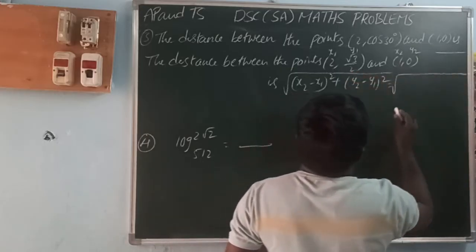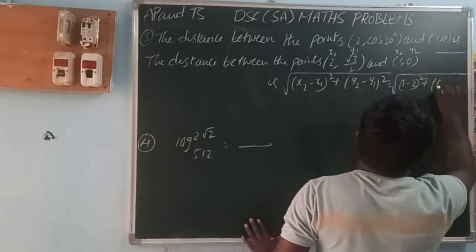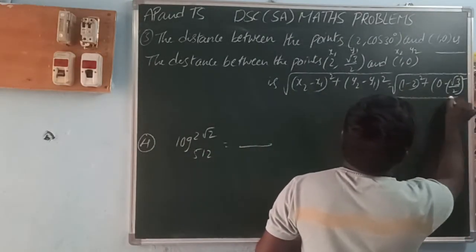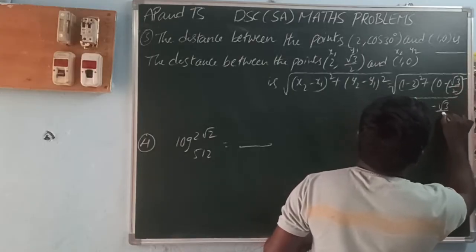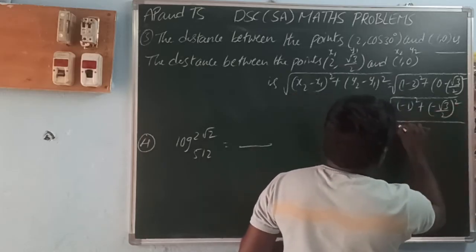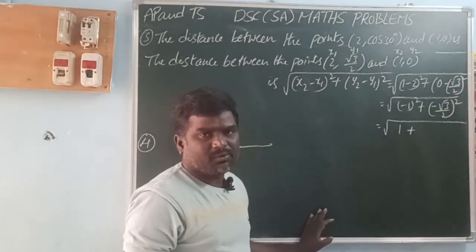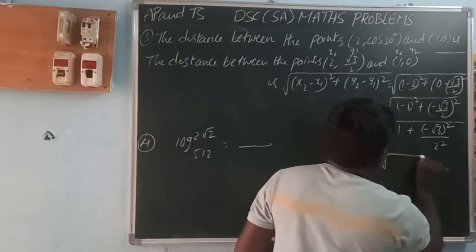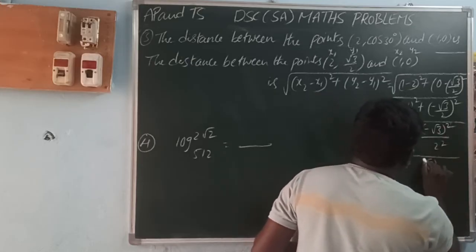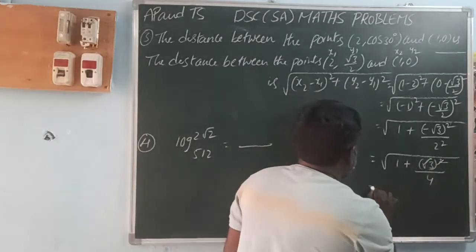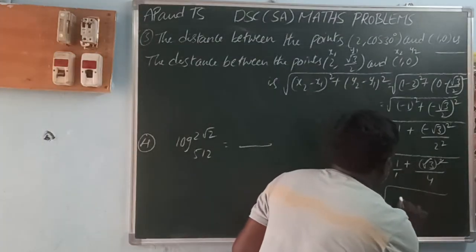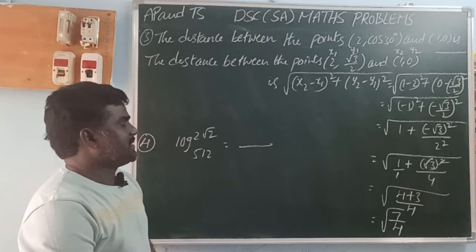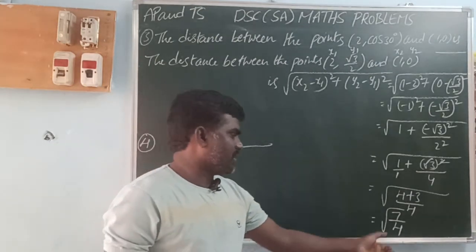Substituting: √[(1 − 2)² + (0 − √3/2)²] = √[(−1)² + (√3/2)²]. That is √[1 + 3/4]. Adding: 4/4 + 3/4 = 7/4. So the distance between the two points (2, cos 30°) and (1, 0) is √(7/4).